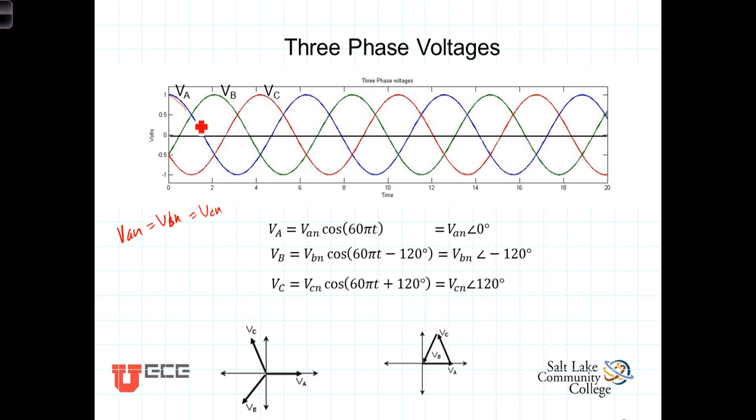So we've got the A phase here. As the A phase is waning, the B phase is coming in. As the B phase wanes, the C phase comes in.